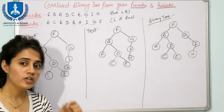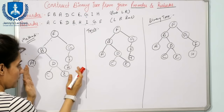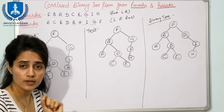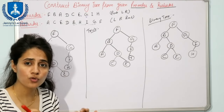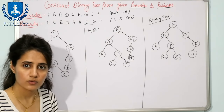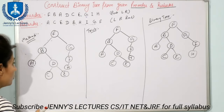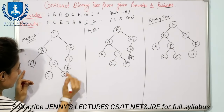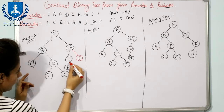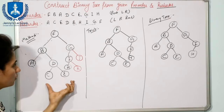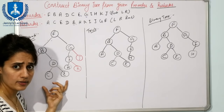The second point was: you can construct a unique full binary tree from given pre-order and post-order. Let us verify this. A full binary tree is one where every node has either 0 or 2 children - that is the only condition, unlike complete binary tree. To make our tree a full binary tree, nodes with only one child need a second child added: insert J and K as needed. Now the tree is a full binary tree.